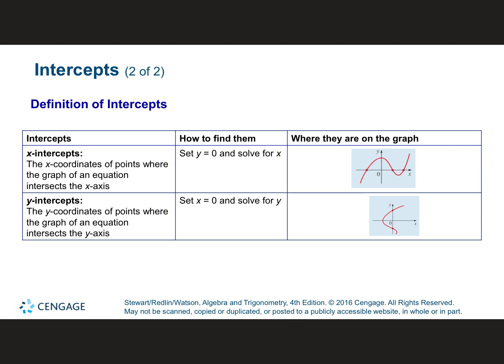Next, we're going to talk about intercepts. We could have an x-intercept, a y-intercept, both, or neither. An x-intercept is where the graph crosses the x-axis. To find x-intercepts, we plug in 0 for y and solve for x. To find y-intercepts, we plug in 0 for x and solve for y — that's where the graph crosses the y-axis. You plug in 0 for the opposite letter that you're looking for.